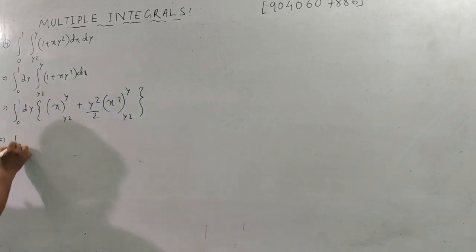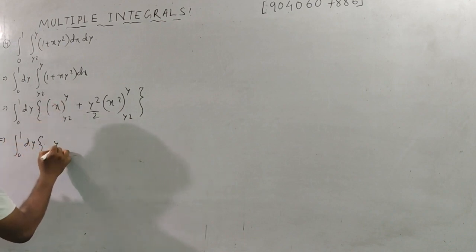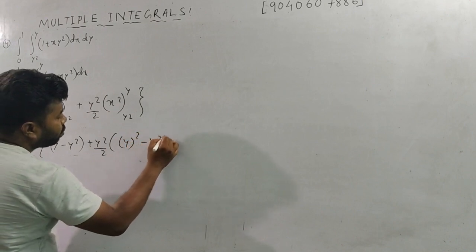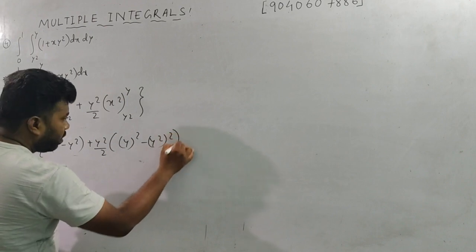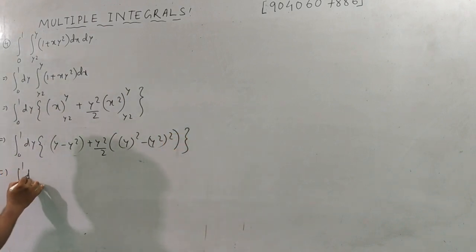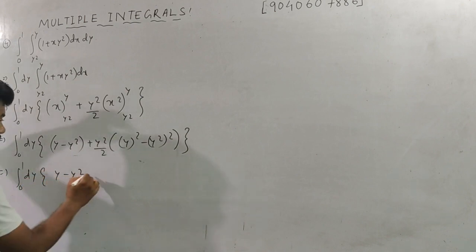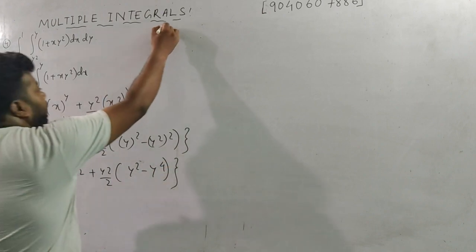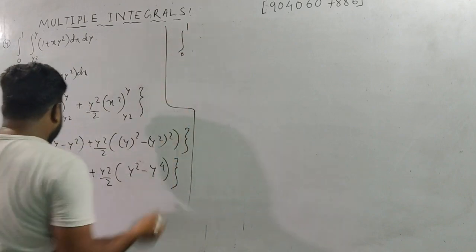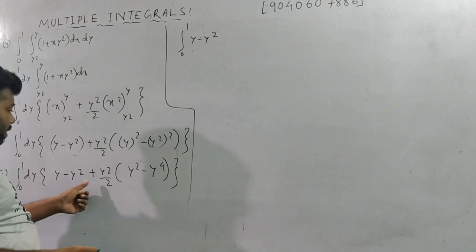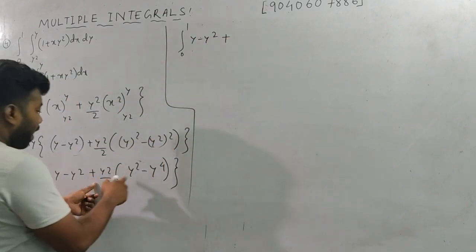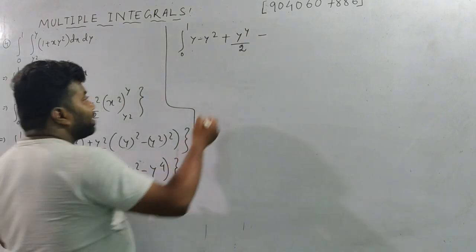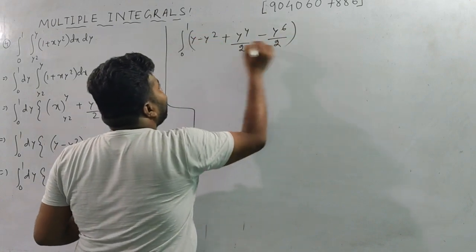From 0 to 1 dy: integrate with respect to x — y² times x from y² to y, plus y² constant times x²/2 from y² to y. Applying limits: y² times (y − y²) plus y²/2 times (y² − y⁴). Simplifying: y³ − y⁴ + y⁴/2 − y⁶/2.